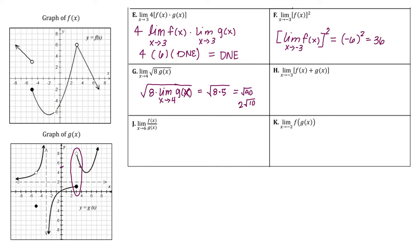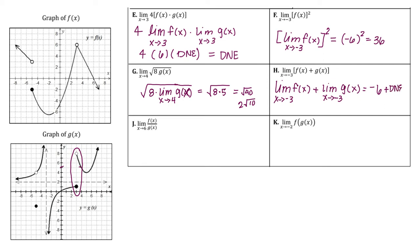For part H, we have the limit as x approaches negative 3 of F of x plus the limit as x approaches negative 3 of G of x. The limit as x approaches negative 3 of F of x is negative 6, but the limit as x approaches negative 3 of G of x does not exist. So the overall limit does not exist.